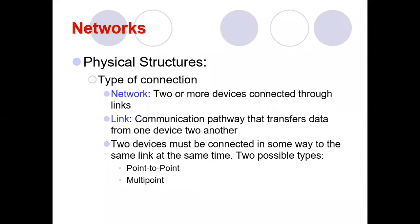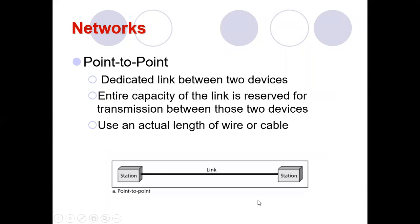A link can be established in two ways: point-to-point and multipoint. In point-to-point, two stations have a dedicated link between them. The entire capacity of that link is reserved for transmission between those two devices only — it cannot be shared by any other device.